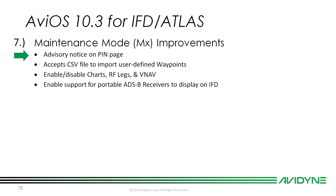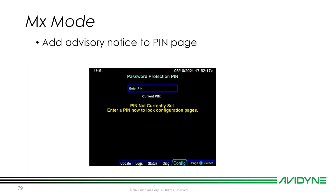Maintenance mode improvements: we changed the advisory notice on the PIN page. The message there previously kind of made it look like a PIN was already set when it wasn't — it was just confusing. We changed the language to make it clearer. You don't have to set a PIN in maintenance mode; if you do and forget it, let us know and we'll send a reset file. Setting a PIN allows you to lock down all your configurations so someone doesn't inadvertently change your interfaces.